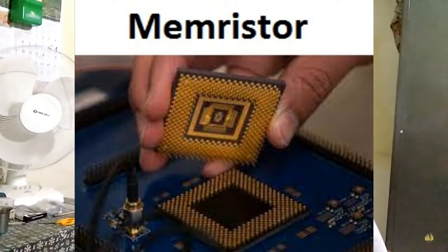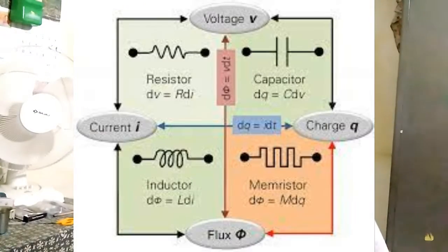The memristor completes a theoretical quartet of fundamental electrical components, which comprises also the resistor, capacitor, and inductor. Chua and Kong later generalized the concept of memristors to systems — such a system comprises a circuit of multiple conventional components which mimics key properties of the ideal memristor.